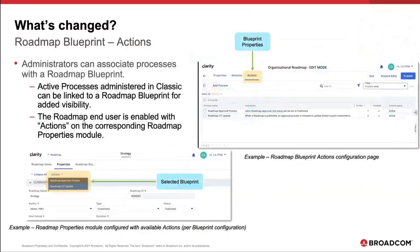Let's talk about action configuration. The admin can link processes with a roadmap blueprint. Active processes are administered in classic and can be linked to a roadmap blueprint — really, any blueprint, which was covered yesterday.